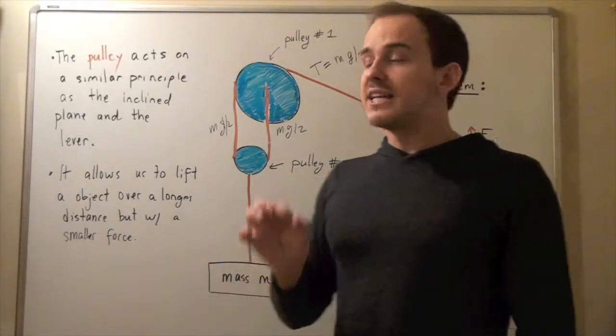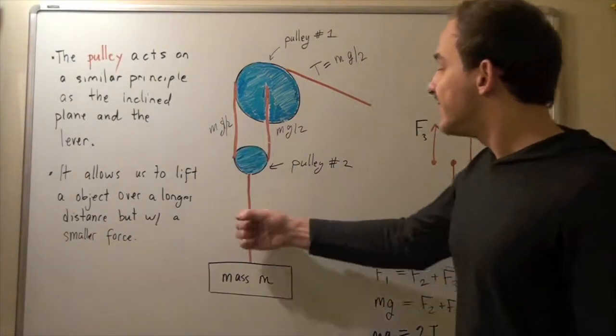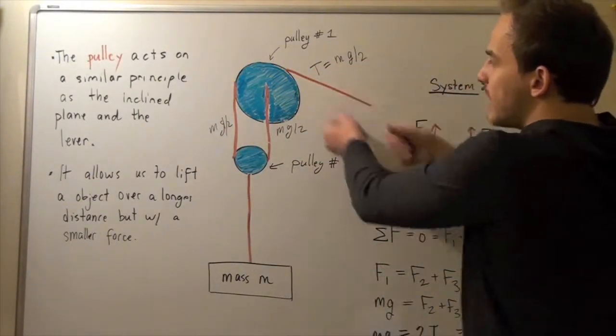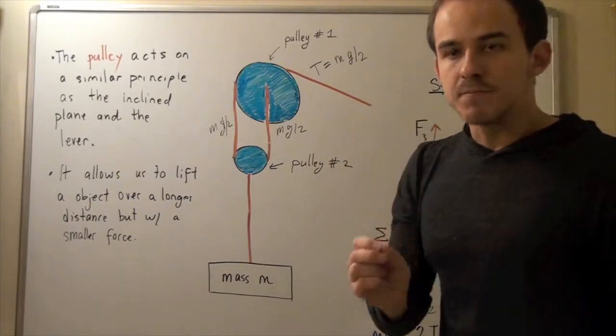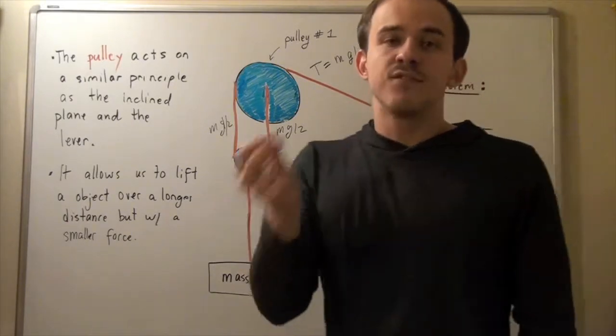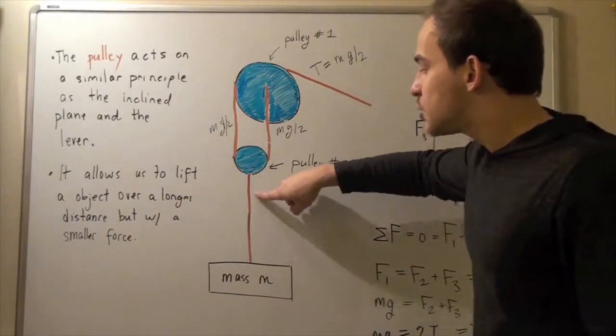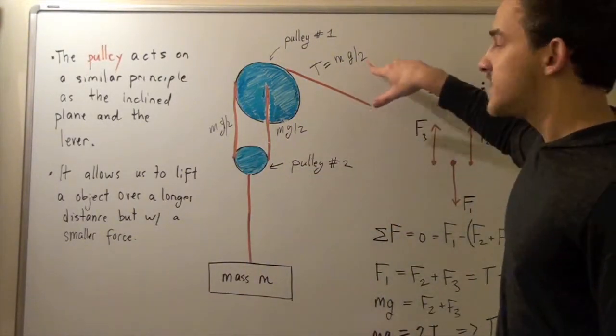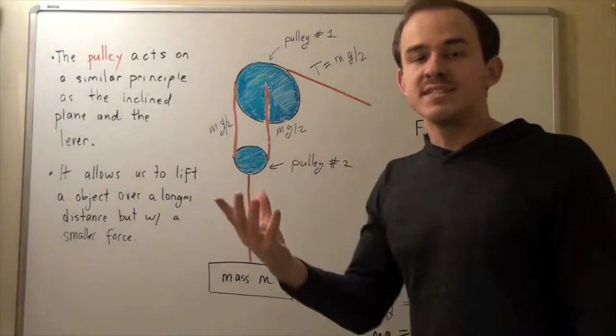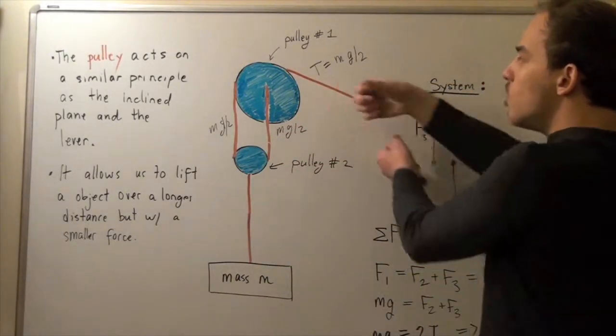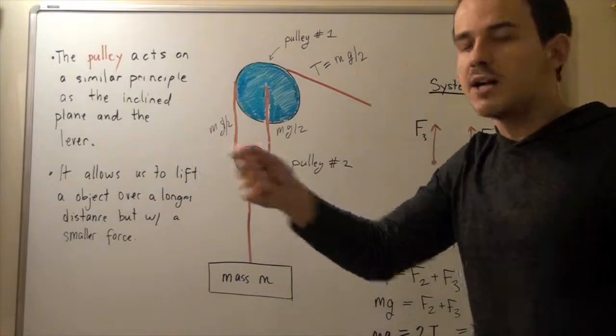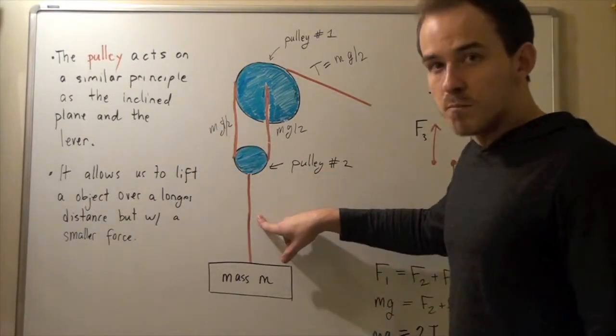But notice that work is force times distance. And because the force here is twice as much as the force here, that means to compensate the distance that this rope moves should be twice as much as the distance this rope moves.